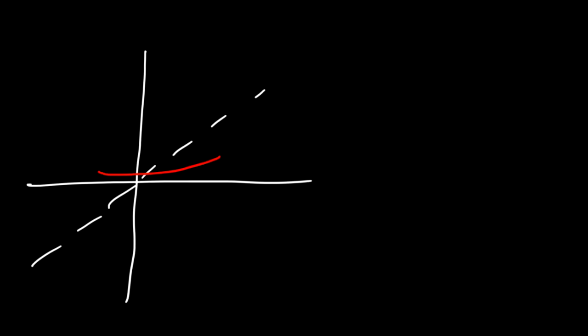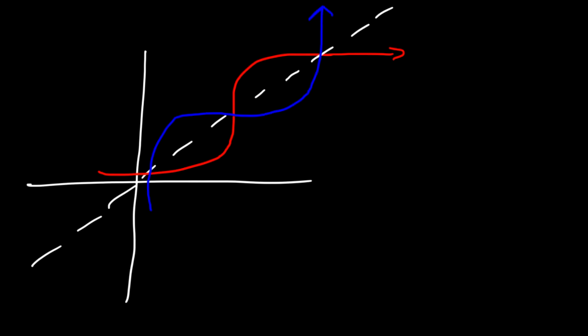So if we have a function and want to draw its inverse, all we need to do is draw the reflection about the line y equals x. If the red line is f of x, the blue line is the inverse function.